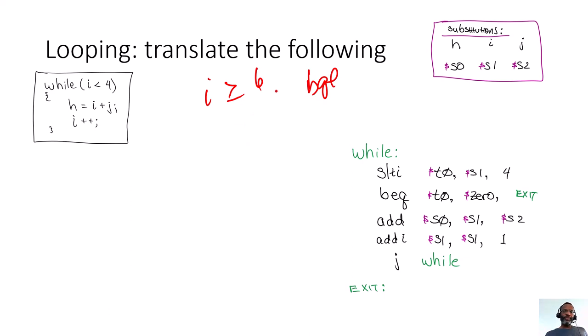The opposite of i greater than or equal to 6 is i less than 6. So that's one way of doing a conversion. If you have i greater than or equal to 6, you can do a set on less than immediate.